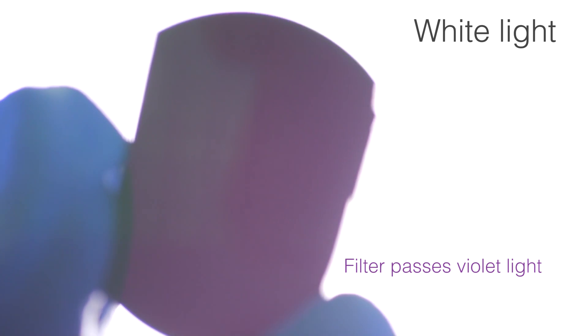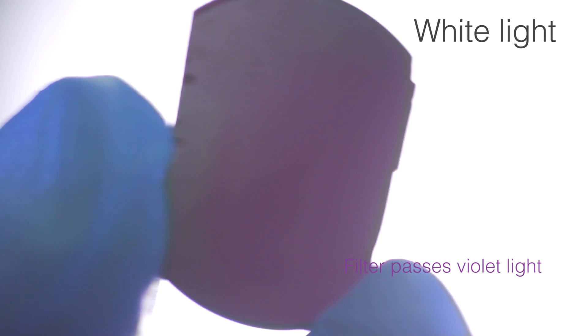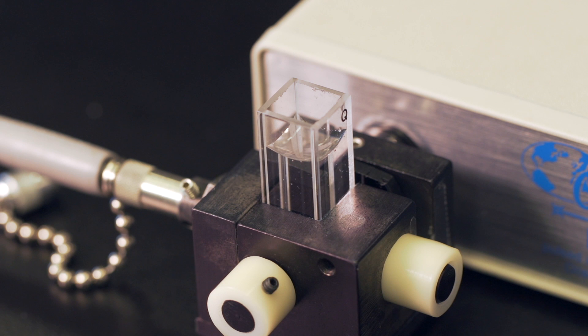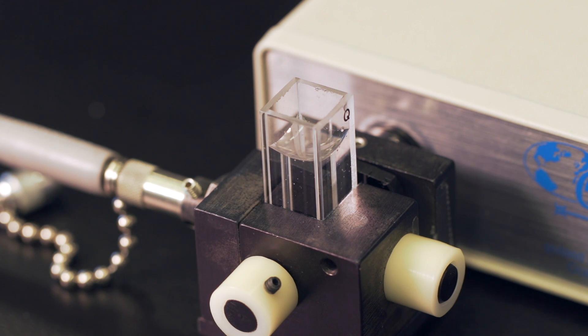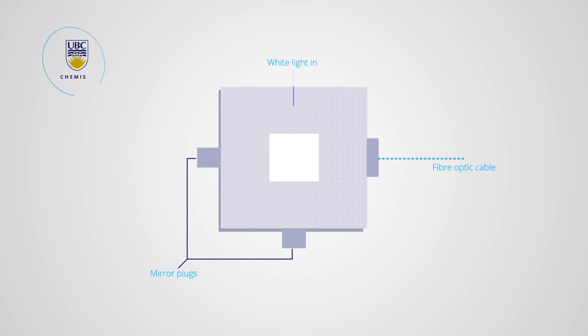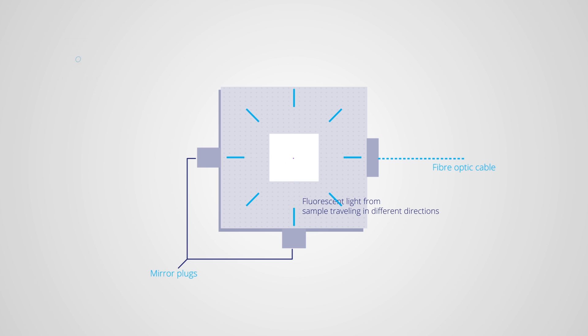The bandpass filter is a piece of colored glass that only permits particular wavelengths to pass through. For our analyte, the bandpass wavelengths are in the violet region of the spectrum, which can be seen when we hold the filter up against a light. As the light enters the cell, it encounters a cuvette filled with solution. The sample solution may absorb the light, and sample molecules become electronically excited. As a molecule relaxes back down to the ground state, it may emit a photon. Only a few of the photons that are emitted enter the fiber optic cable, since fluorescence occurs randomly in all directions — most don't reach the fiber optic cable and are lost.